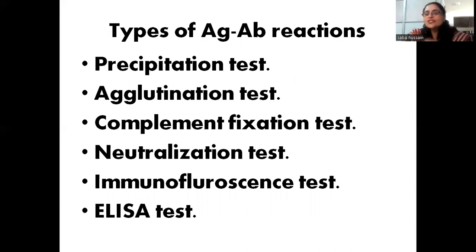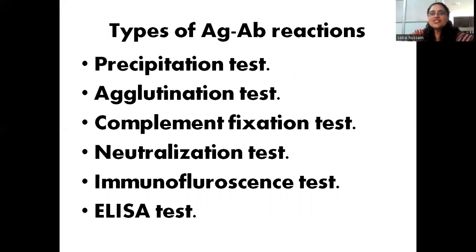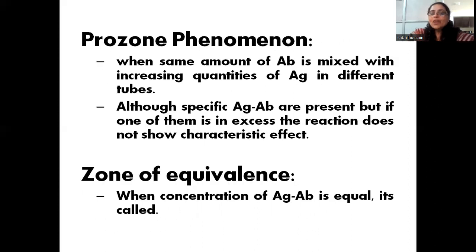What are the different types of antigen-antibody reactions? These are reactions which we can perform in vitro to detect one unknown from a sample. The different types are: precipitation test, agglutination test, complement fixation test, neutralization test, immunofluorescence test, and ELISA test. Each one we will be reading in detail. I will be taking each test differently in different classes.